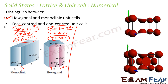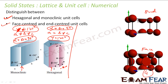The next question was the difference between face-centered and end-centered. In face-centered, you have atoms on all faces — six faces, each contributing one-half, giving three, plus one from corners, totaling four atoms per unit cell. In end-centered, you have atoms only on two faces, contributing one-half each, giving one, plus one from corners, totaling two atoms per unit cell. So the difference is four atoms per unit cell versus two atoms per unit cell.